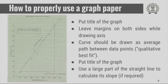On this slide, I have shown how to properly use graph paper. You have to first put the title of the graph to show what it represents — in this case, the graph shows reflection as a function of resistance. You have to leave margins on both sides before drawing the axis, so you can put axis labels. Once you have plotted all the data points, draw the curve as a qualitative best fit through the data points. Also put a scale in a box representing what one centimeter corresponds to on each axis. If calculating the slope, use a large portion of the straight line.